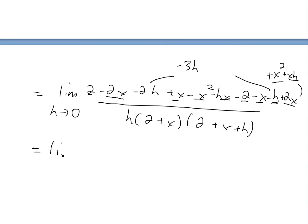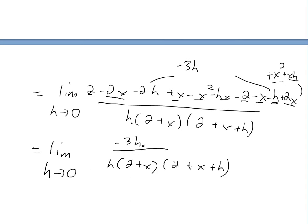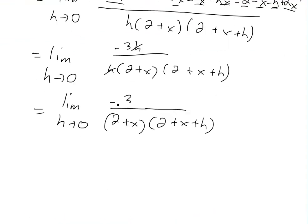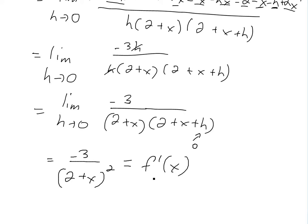So all we're left with is limit as h approaches 0 of negative 3h divided by h, times (2 plus x)(2 plus x plus h). The h's cancel, leaving negative 3 all divided by (2 plus x)(2 plus x plus h). Now we can plug in h equals 0, giving us negative 3 divided by (2 plus x) squared. This is our answer: f prime of x equals negative 3 over (2 plus x) squared.